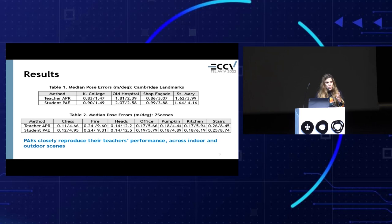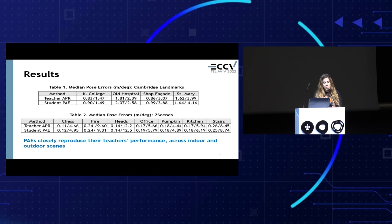We first wanted to check whether students can actually reproduce their teacher's performance, so we evaluated our approach on the Seven Scenes and on the Cambridge Landmarks dataset. These are two datasets that represent different localization challenges. As the teacher, we used a recent state-of-the-art APR called MS Transformer. You can see here the median pose error — position and orientation errors — across different scenes. Indeed, the student PAE closely reproduces the performance of the teacher.